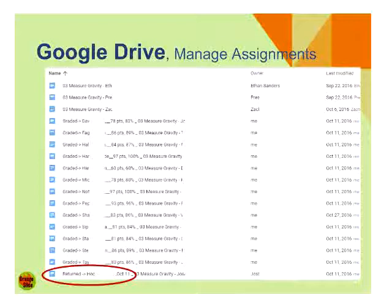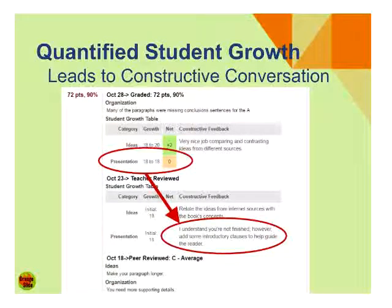The overall presentation is about this quantitative student growth and how it leads to the conversation. We see with presentation, going from 18 to 18 points — why? What's the root cause? It leads us back to the history when your conversations were documented, and we can use that as our starting point for the next conversation with the student. How can we grow them academically? So that's the presentation.